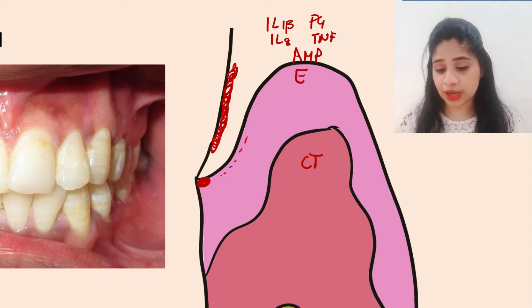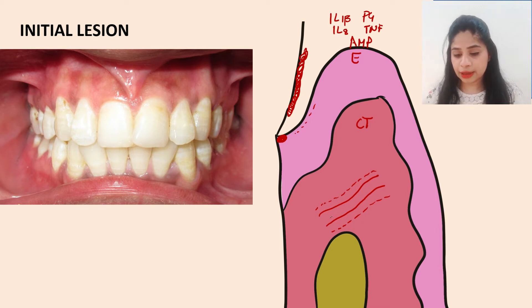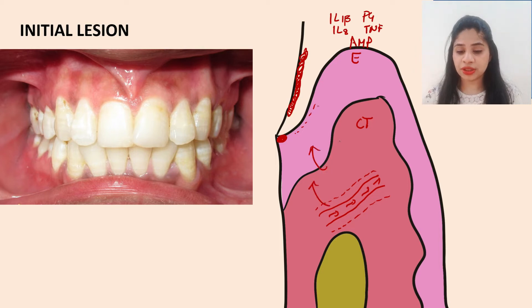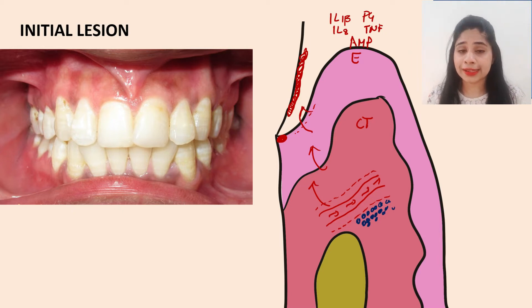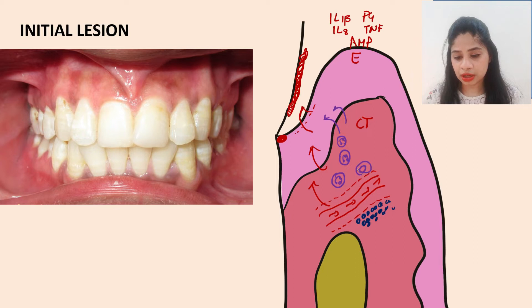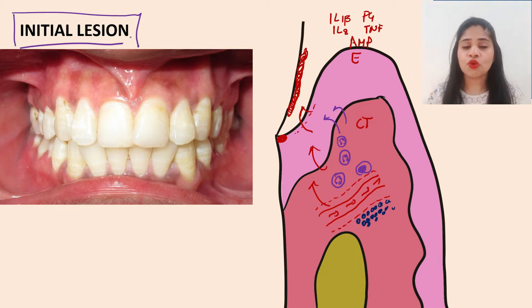In the connective tissue of Stage 1, vasodilation occurs — the blood vessel dilates and blood flow increases. This increased blood flow leads to increased GCF production. The perivascular connective tissue shows destruction. Importantly, PMNs migrate into the gingival sulcus, and lymphocytes also accumulate in this stage.